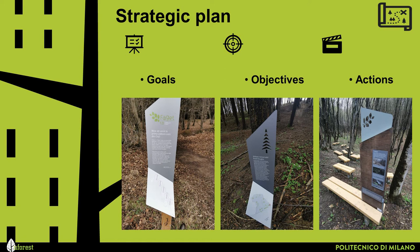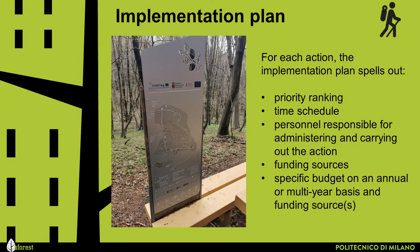For example, suppose you set a goal to increase canopy cover from 20 to 30% within 10 years. This goal is explicit and quantifiable but doesn't indicate what needs to be done — that's where objectives come in. Regarding the implementation plan, this describes how each action will be carried out. It is likely to span shorter time blocks and will be revised based on the pace of implementation. For each action, the implementation plan spells out priority ranking, time schedule, responsible personnel, funding sources, and specific budget.